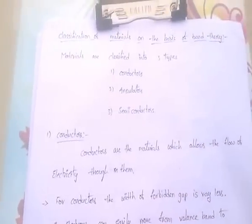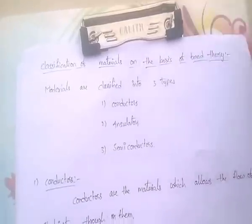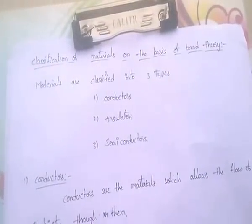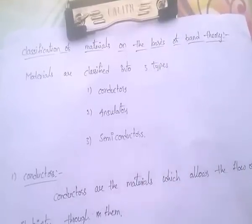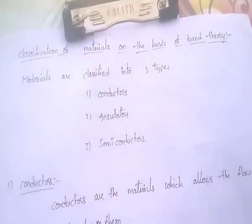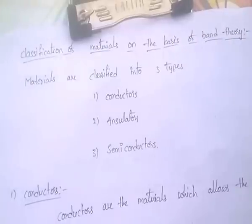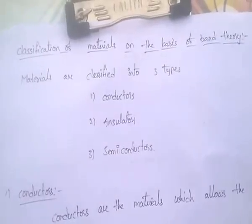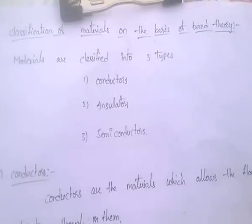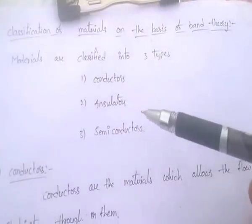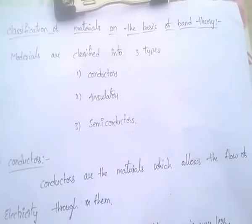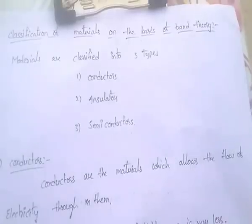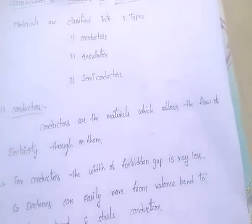Next topic: classification of materials. Materials are classified into three types according to band theory. First one, conductors; second one, insulators; third one, semiconductors.